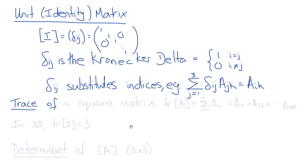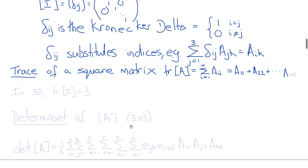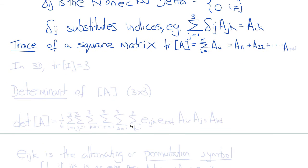Another property of a square matrix is the sum of its diagonal components, known as the trace. The trace of A is Σ(i=1 to n) aii = a11 + a22 + ... + ann. For a 3×3 identity matrix, the trace of I equals 3, since 1 + 1 + 1 = 3.